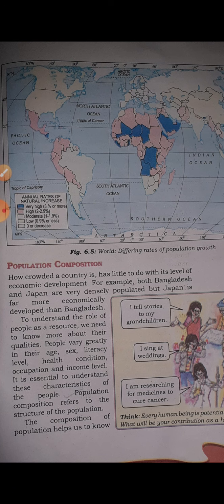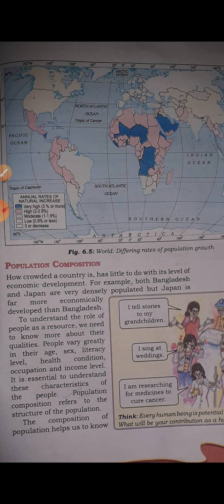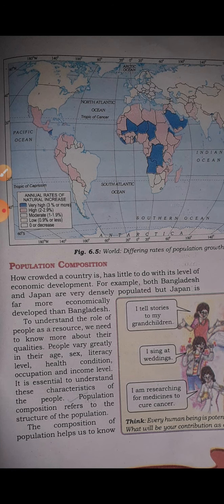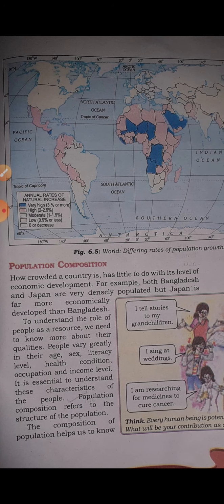We also took up the density of population — the number of people living in one square kilometer area. For example, in India, Uttar Pradesh has very high density. In contrast, areas like Uttarakhand or Jammu & Kashmir have extreme climatic conditions, so their density compared to plain areas is very low. These are factors affecting population distribution.